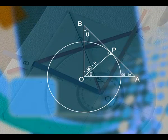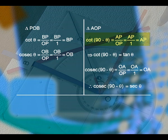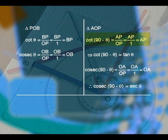Now, in triangle A, O, P, cot(90 minus theta) equals adjacent side by opposite side, which is AP by OP, equal to AP. We know that AP is nothing but tan theta. Therefore, cot(90 minus theta) is equal to tan theta.